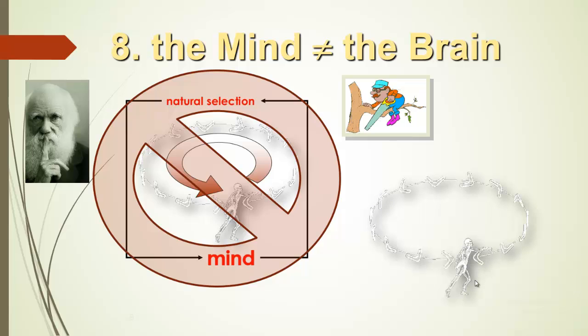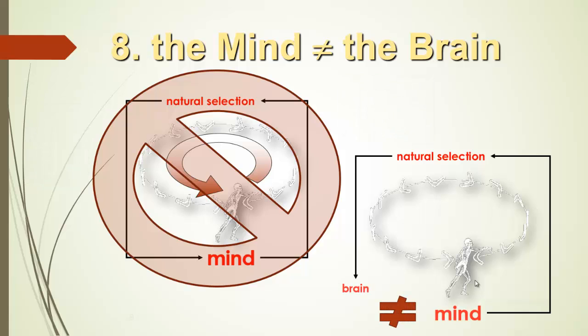So in another way, we should avoid this boomerang effect. The mind came up with the theory of natural selection, actually Darwin's mind. Natural selection produced the brain, but the brain is not the mind.